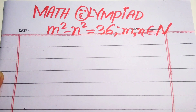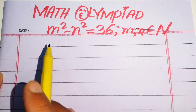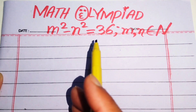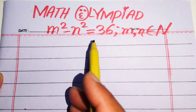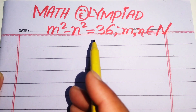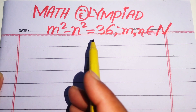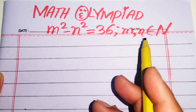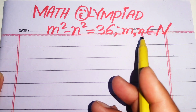Hello everyone, welcome. We solve this math algebra problem where m squared minus n squared equals 36, and we solve this problem for the natural values of m and n.